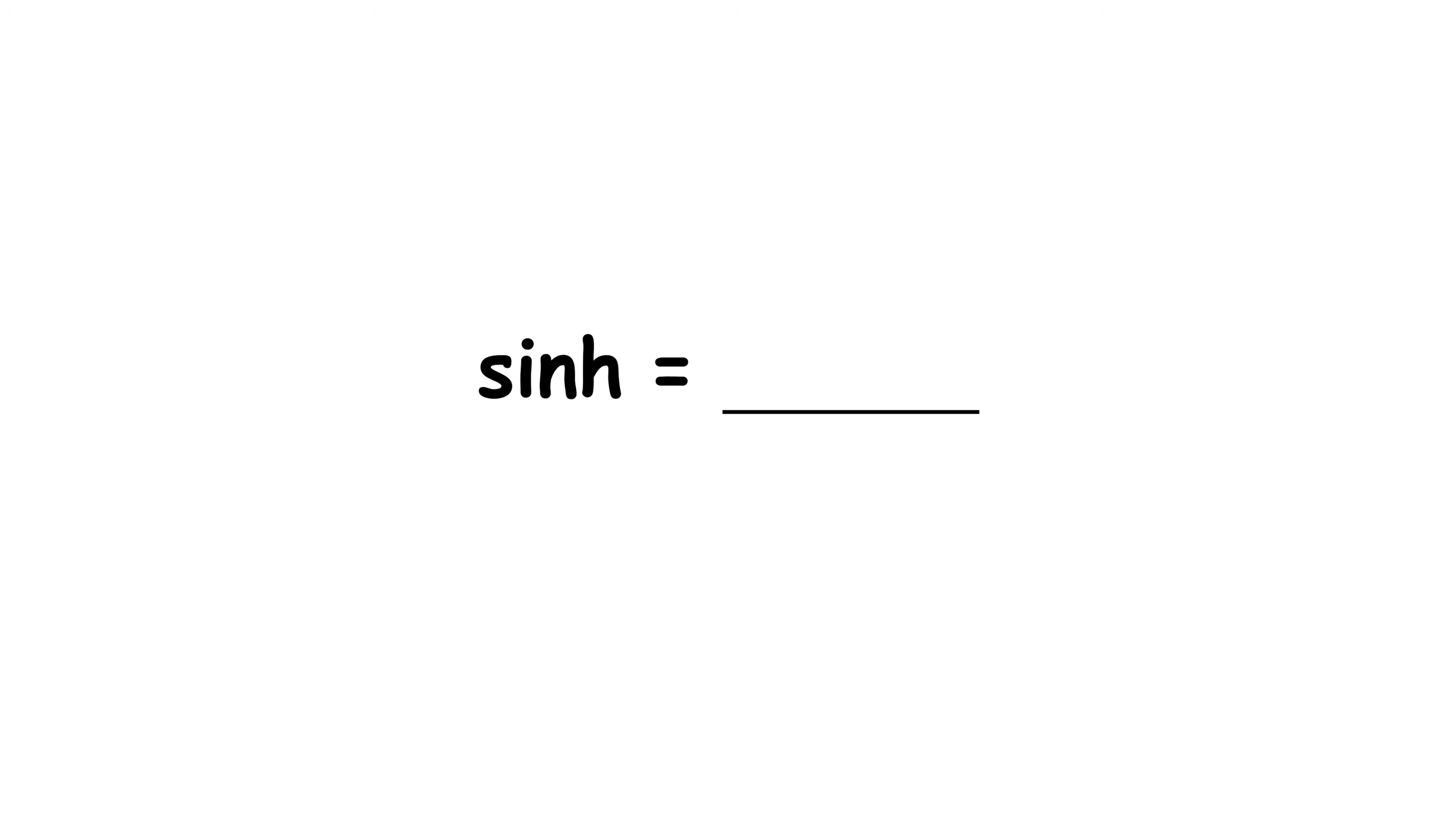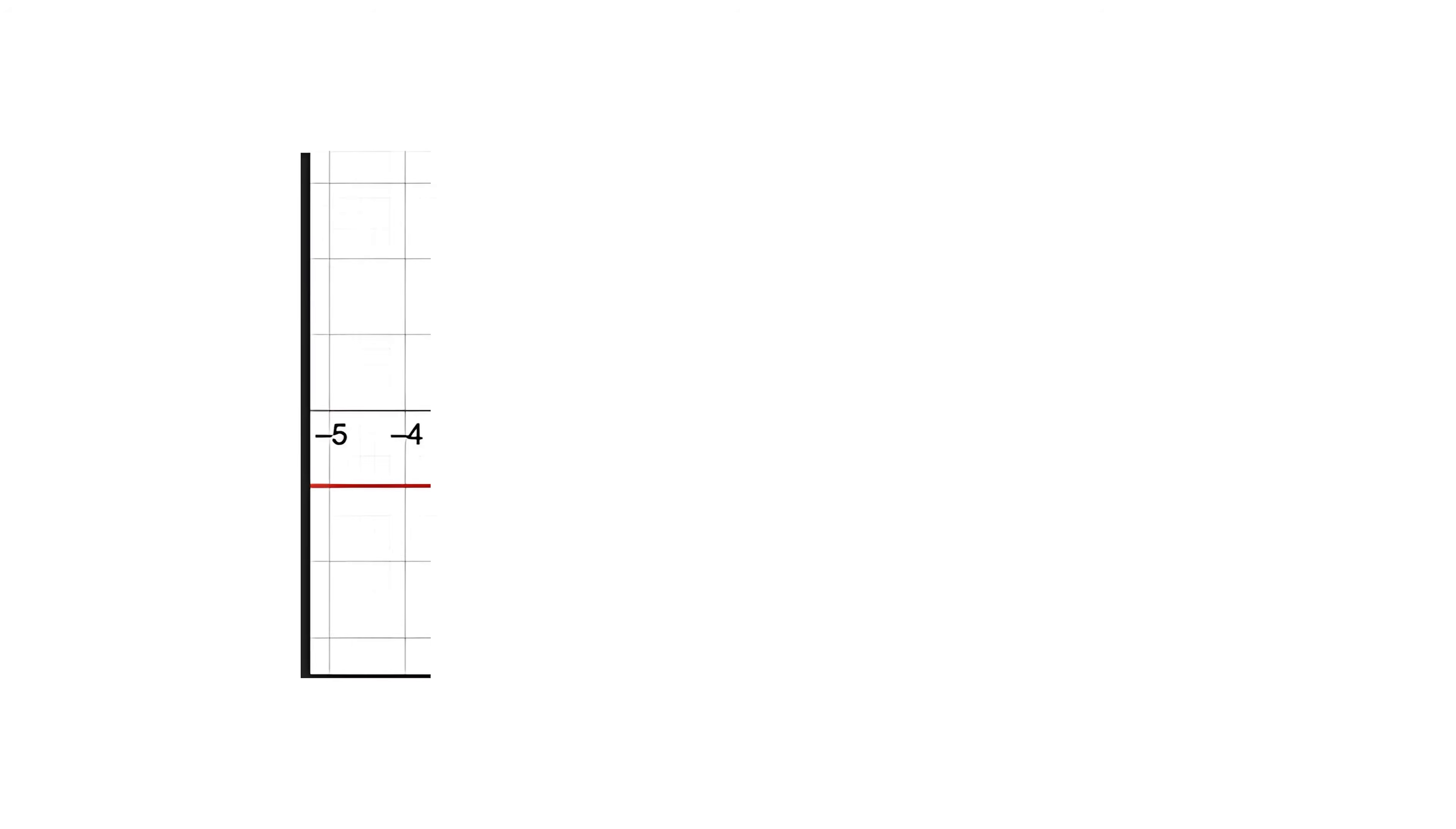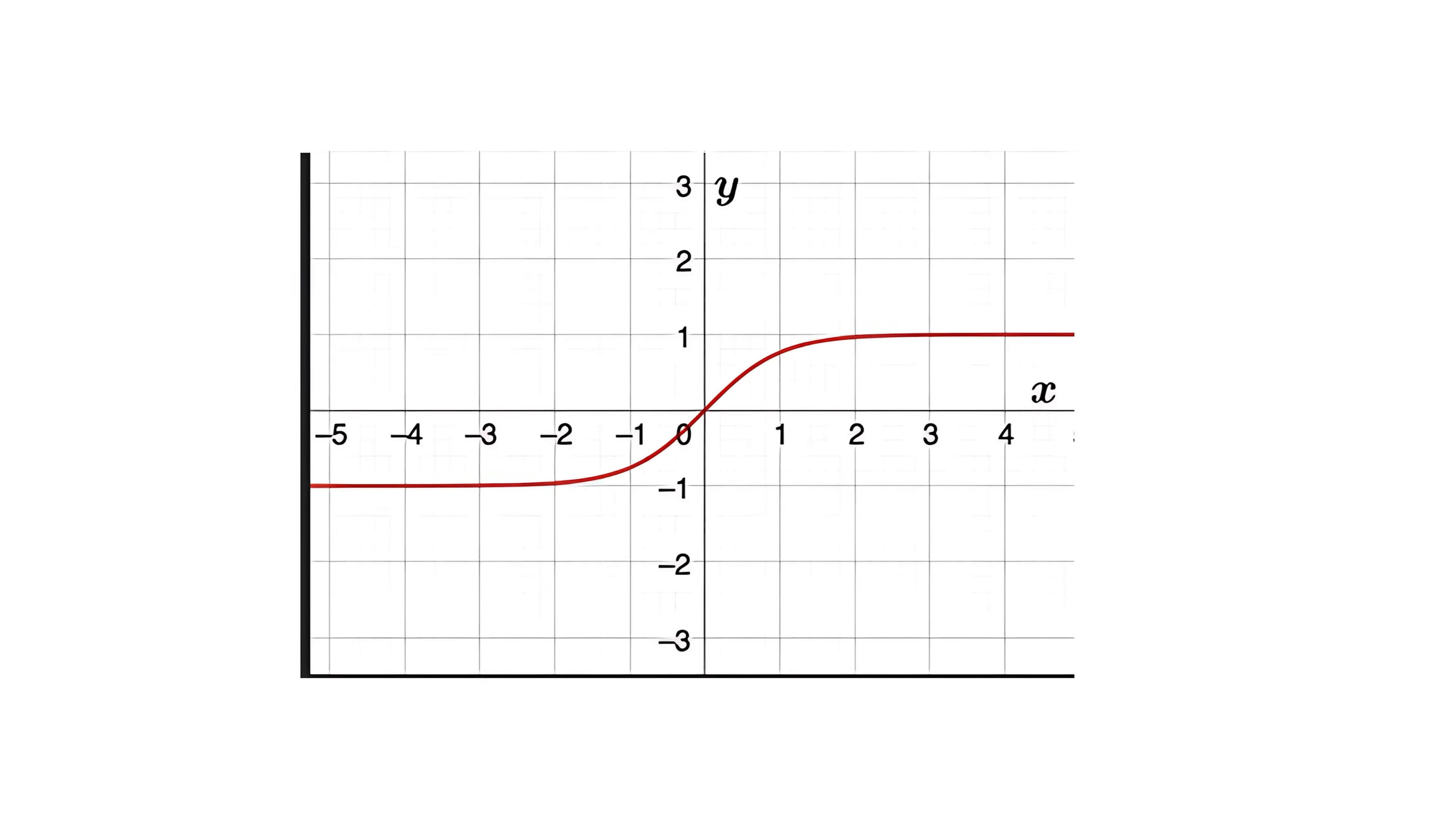For example, sinh of x equals e to the power of x minus e to the power of negative x over 2. They are related to hyperbolas instead of circles. They are not periodic, but they have useful symmetries and smooth, continuous graphs.